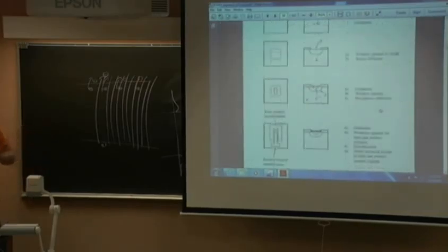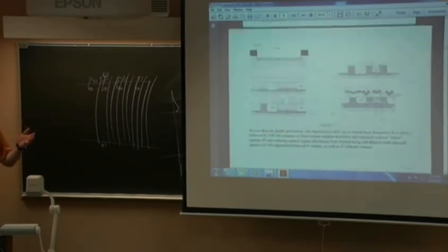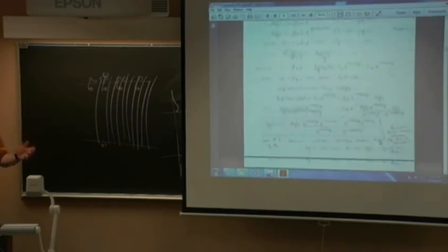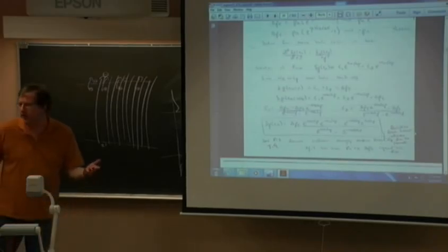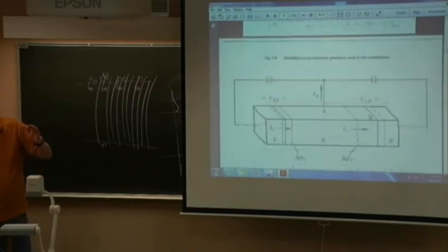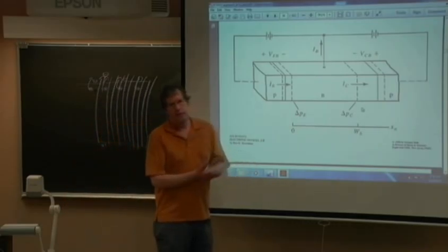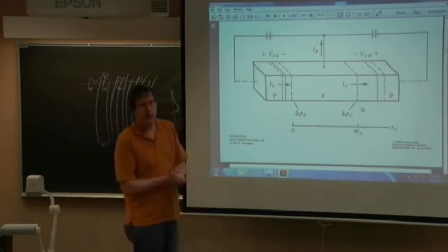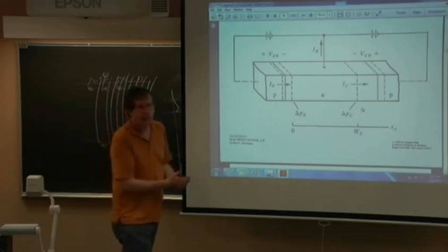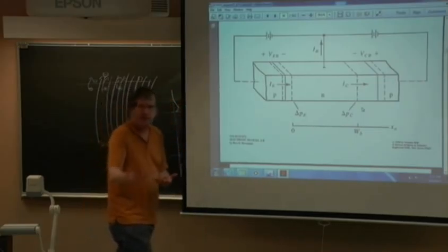We talked about double-diffused bipolar structures. The Ebers-Moll equations are the full setup equations for bipolar transistors — you don't need to memorize all those equations since this is essay-based. If we had time, there would have been a homework assignment. Fortunately for you, you didn't have to agonize over that.